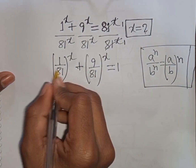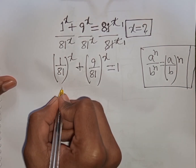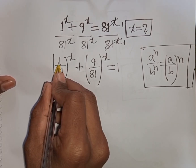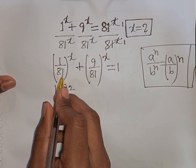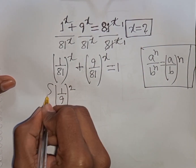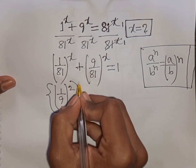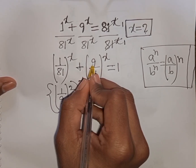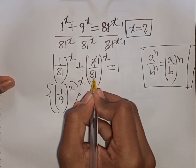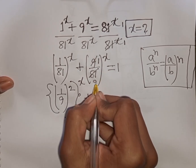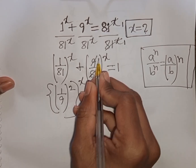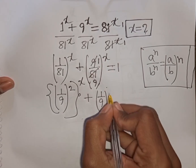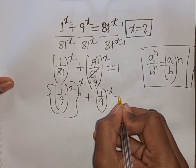Now, 1/81 can be written as (1/9)², since 1² = 1 and 9² = 81. So the first bracket becomes (1/9)^(2x) and the second term 9/81 simplifies to 1/9, giving (1/9)^x. So we have (1/9)^(2x) + (1/9)^x = 1.